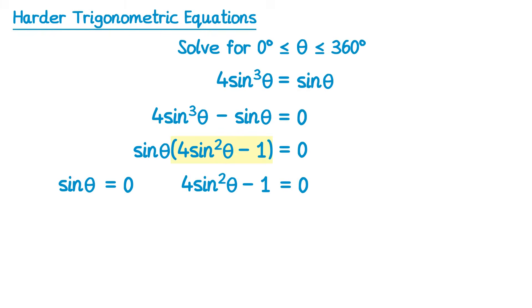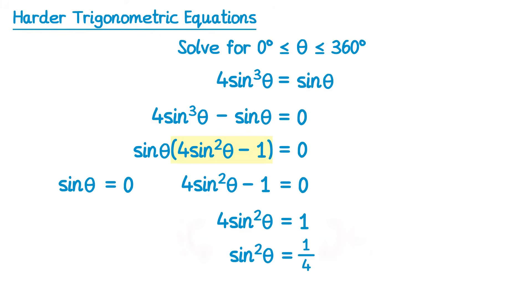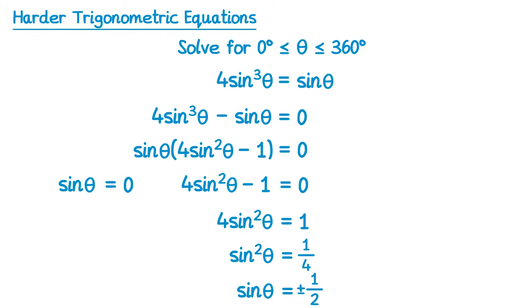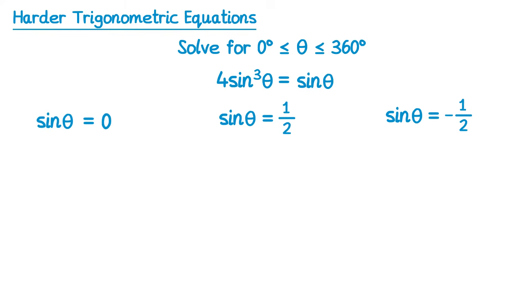We can rearrange the second equation: add 1 to both sides to get 4 sin squared theta equals 1, then divide both sides by 4 to get sin squared theta equals one quarter, and finally square root both sides. Square rooting the left gives sin theta and square rooting the right gives plus or minus one half. So we end up with three equations: sin theta equals 0, sin theta equals one half, and sin theta equals negative one half.